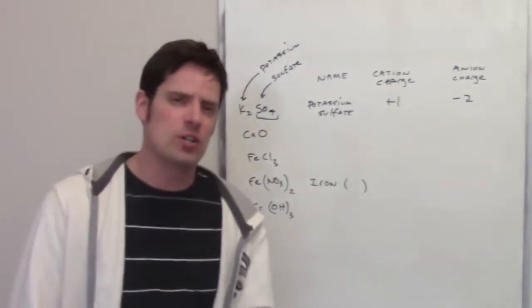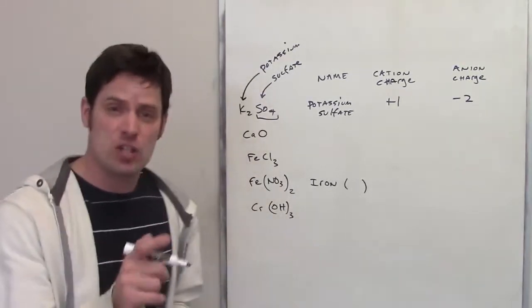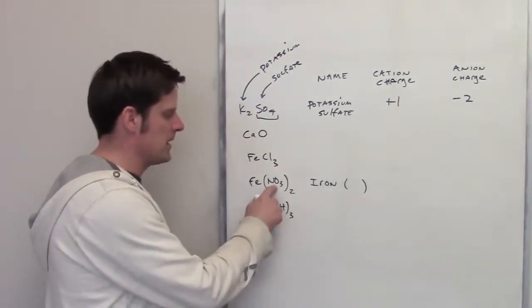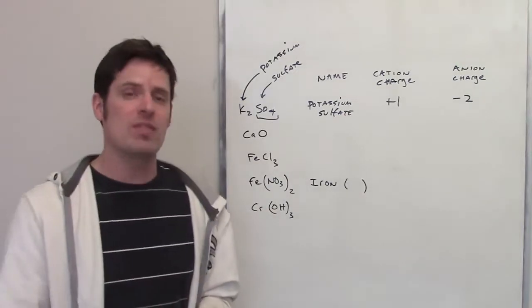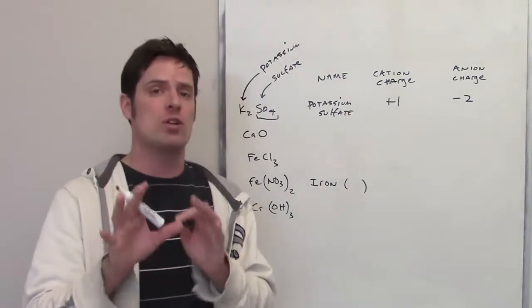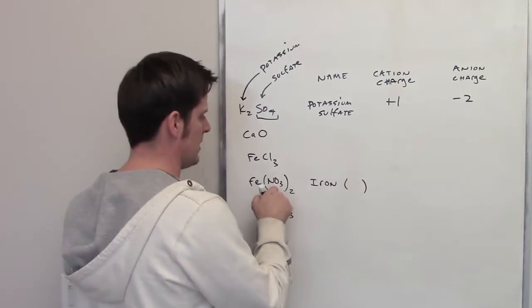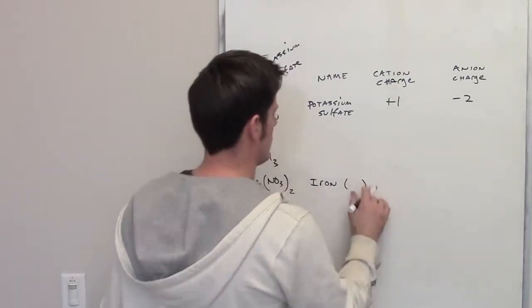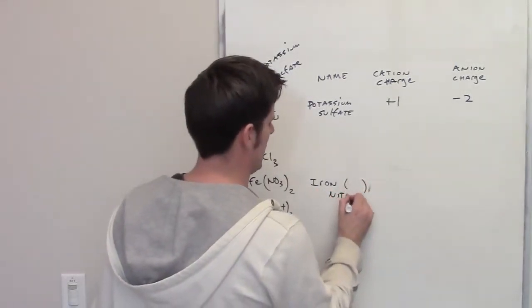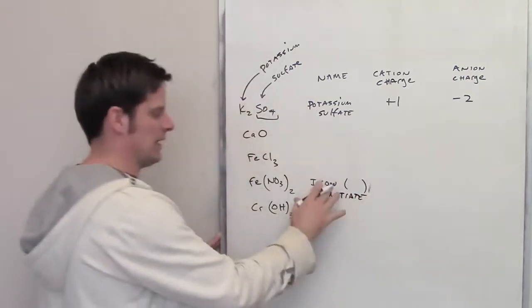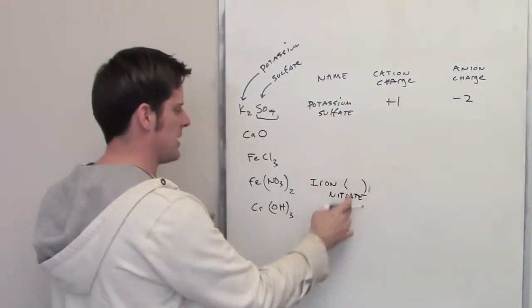How do I figure out what that charge is? Well I do that by looking at the charge of the anion. So that anion, NO3, is one of the polyatomic anions whose names and charges I've required you to memorize. That anion is called nitrate. Now I'm going to go ahead and write it down here because I don't have enough room to do it in one line, but it's iron something nitrate.